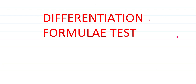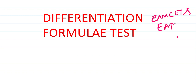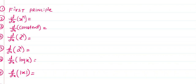Differentiation formulas for M set and F set. Here I explain the most important formulas in the chapter on differentiation. The first principle states: f'(x) is equal to the limit as h tends to 0 of [f(x+h) minus f(x)] divided by h.